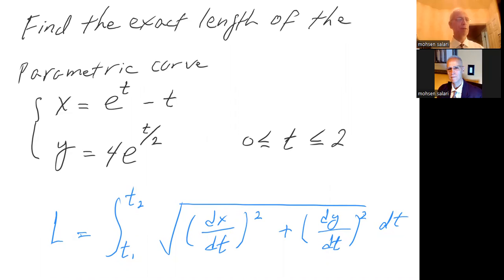The formula that you are given is the length is from t1 to t2. Most textbooks use a and b, from a to b. Well we know that from a to b means from t1 to t2. So from t1 to t2, square root of dx dt squared added to dy dt squared, and all that dt.